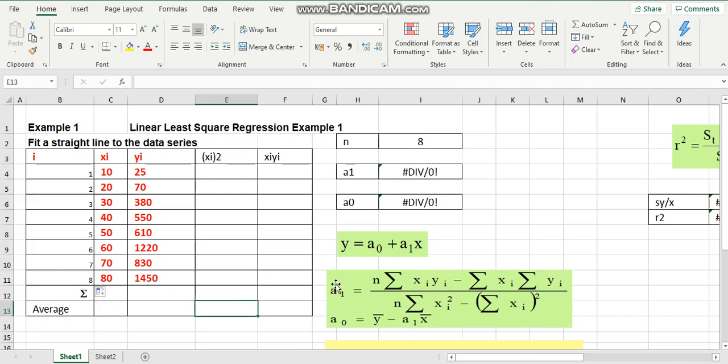Now, we look at the formula of A0 and A1. Here are the data we have to collect from the Excel. So, we start with X squared and X times Y function.